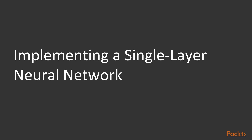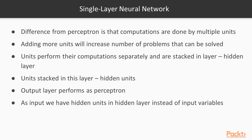Next, we implement a single-layer neural network. We start by implementing the simplest form of a neural network. The difference from a perceptron is that the computations are done by multiple units, hence a network. Adding more units will increase the number of problems that can be solved. The units perform their computations separately and are stacked in a layer — we call this the hidden layer, and the units within it the hidden units.